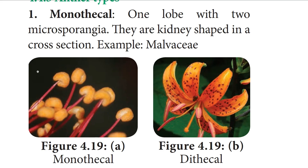Based on the anther, there are two types: Monothecal — the anther has one lobe with two microsporangia, kidney-shaped in cross section, example: Malvaceae; and Dithecal — the anther has two lobes with four microsporangia, butterfly-shaped in cross section, example: Solanaceae.